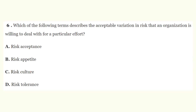Question number six: which of the following terms describes the acceptable variation in risk that an organization is willing to deal with for a particular effort? A) risk acceptance, B) risk appetite, C) risk culture, D) risk tolerance. The correct answer is D, risk tolerance. Risk tolerance is the acceptable variation in risk that an organization is willing to deal with for a particular effort.